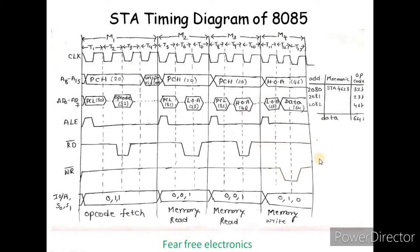In the fourth machine cycle M4, the memory write operation is performed. The WR bar signal goes active low — write is 0. The accumulator data (64H) is written to memory location 4623H. Then the write signal returns to 1, completing the write operation.